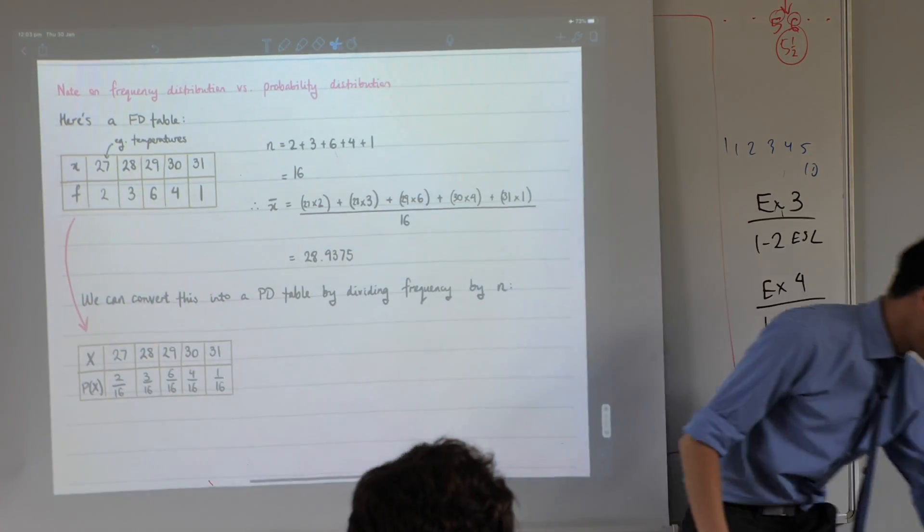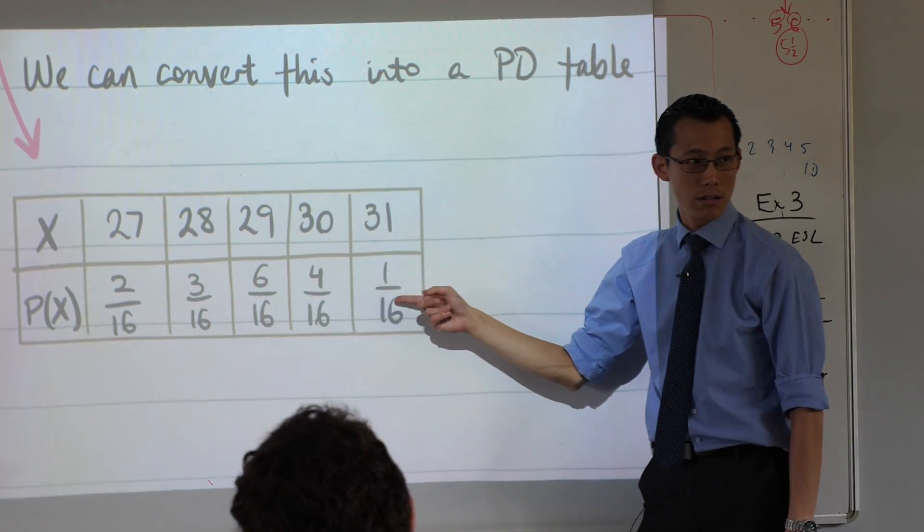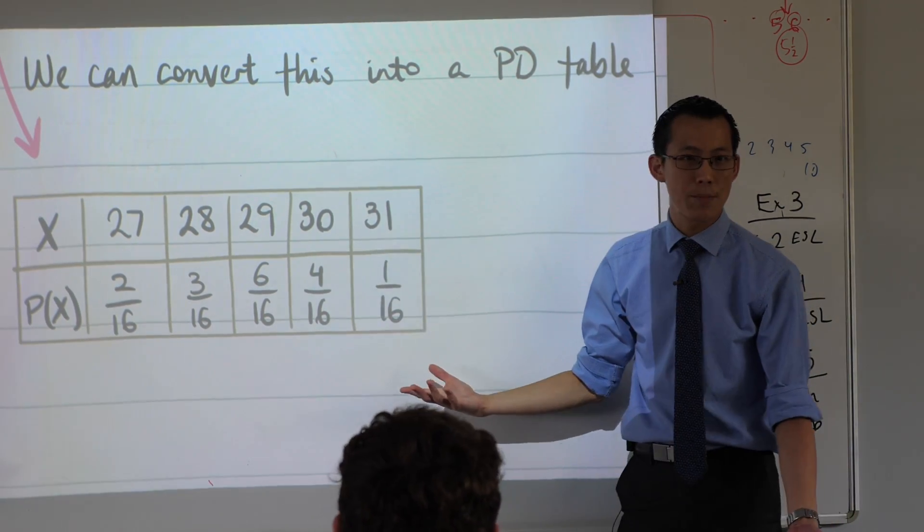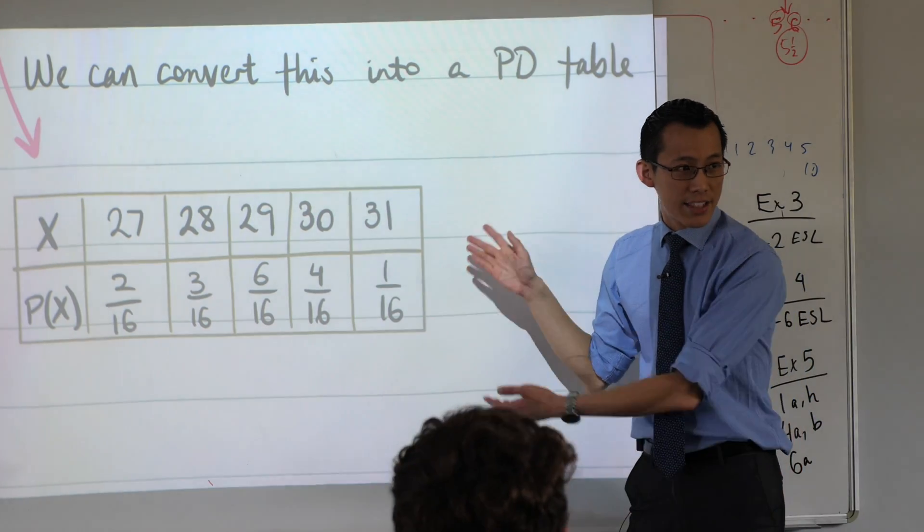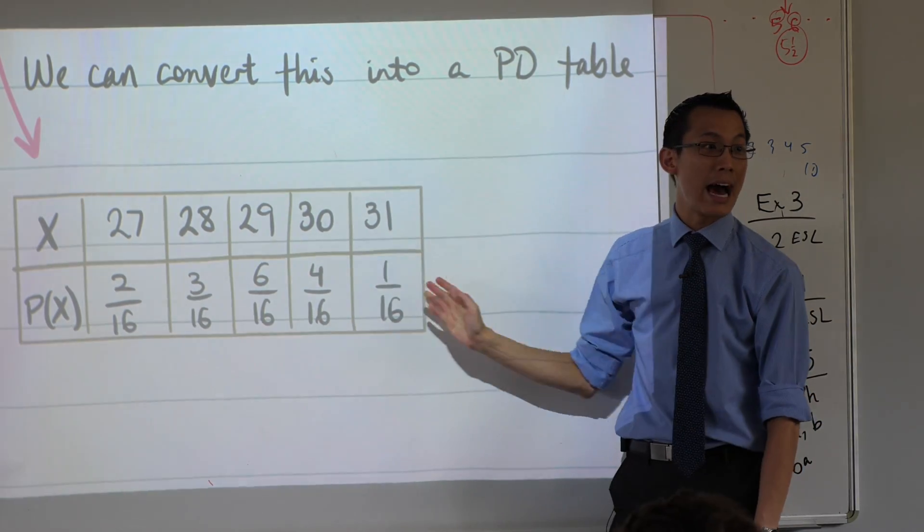Same values but look at what I've done. Same temperatures. What's going on here? What does 1 over 16 represent? It's the chance of picking out this day, that 31 degree day, out of all of them.